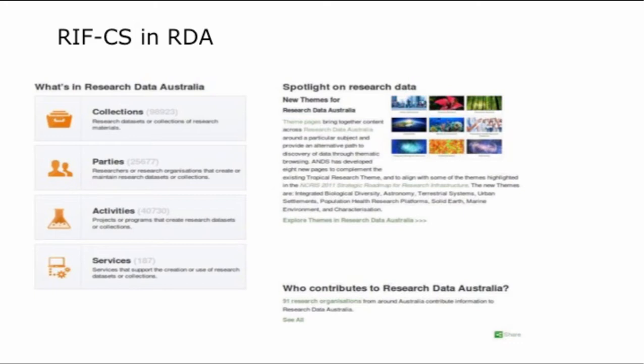RIFCS is really what we're here to talk about today. We'll start with a brief overview — an introduction for those who are new to RIFCS and a refresher for our more experienced audience. RIFCS is a metadata exchange format that populates the records that users see in Research Data Australia. There are four classes of records described in Research Data Australia: collections, parties, activities and services. This is a key differentiating feature between RIFCS and many other metadata schemas — this concept of the four classes of records.